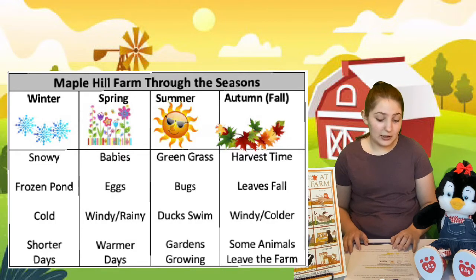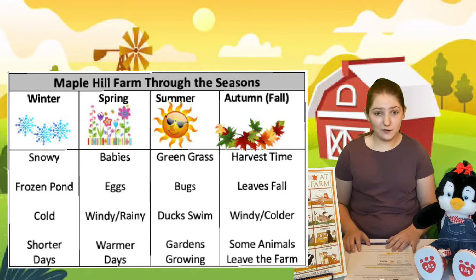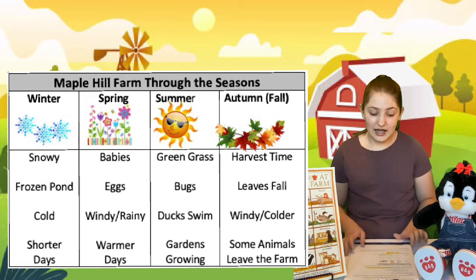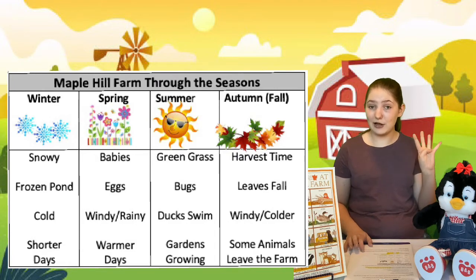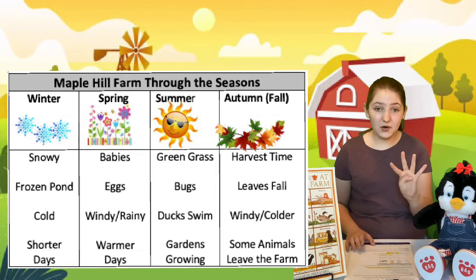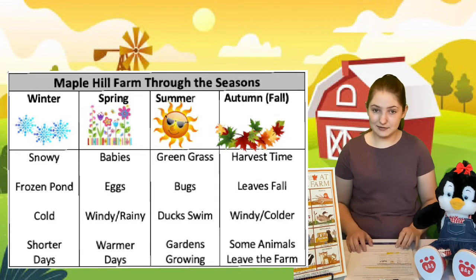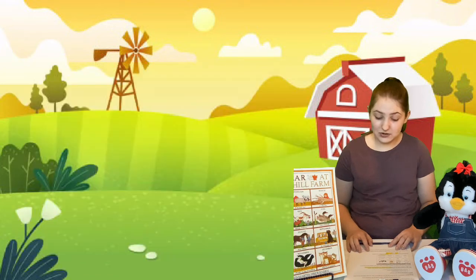Remember when we made our evidence organizer about what was happening on the farm? Our organizer had all four seasons: winter, spring, summer, and fall. And under each one, we said four things about each of the seasons. In today's assignment, tell us what the animals are doing in each season.